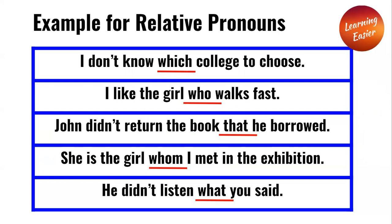She is the girl whom I met in the exhibition. "Whom" is a relative pronoun in this sentence. He didn't listen to what you said. "What" is the pronoun in that sentence.